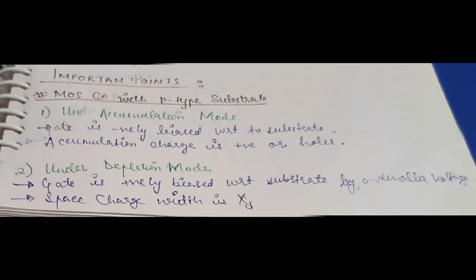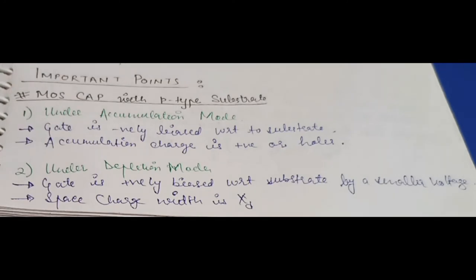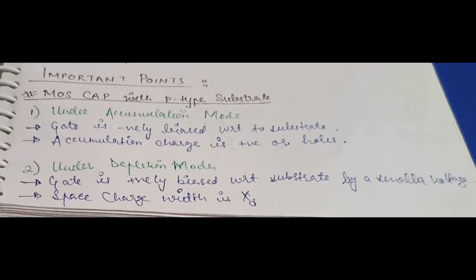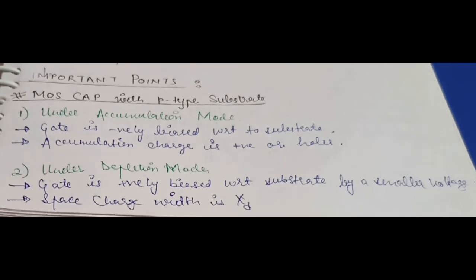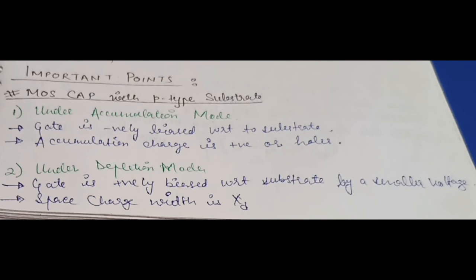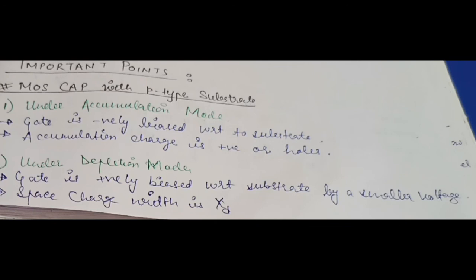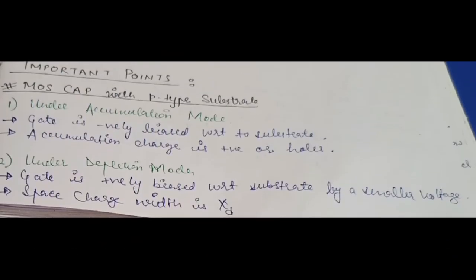Let's summarize the key points for the MOS capacitor with a p-type substrate. First, under accumulation mode: the gate is negatively biased with respect to the substrate, and the accumulation charge is positive (holes). Second, under depletion mode: the gate is positively biased with a smaller voltage, a space charge region is created, and its width is denoted XT. Third, under inversion mode: the gate is positively biased with a larger voltage, an inversion layer is formed, and the charges in the inversion layer are negative.